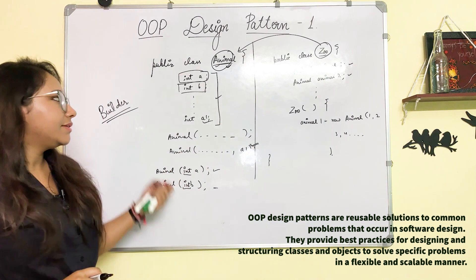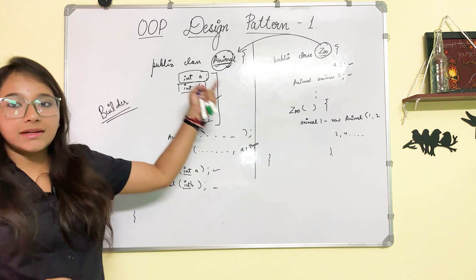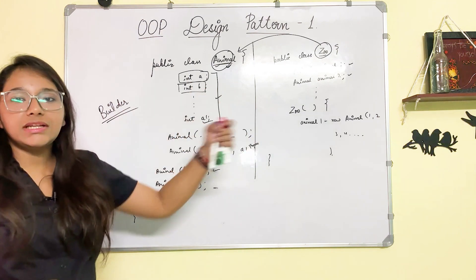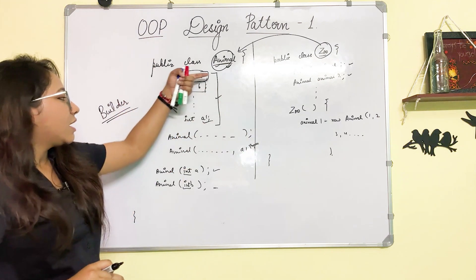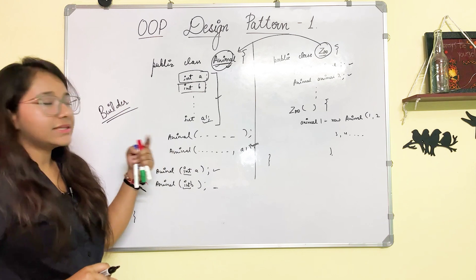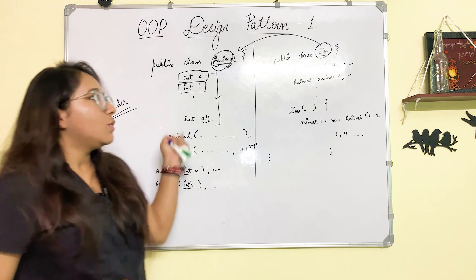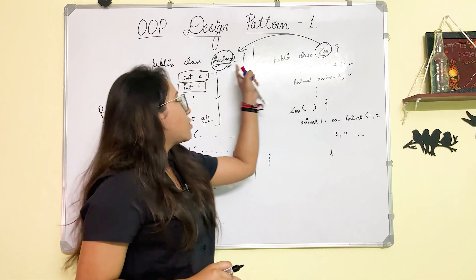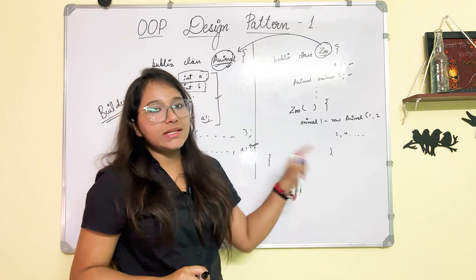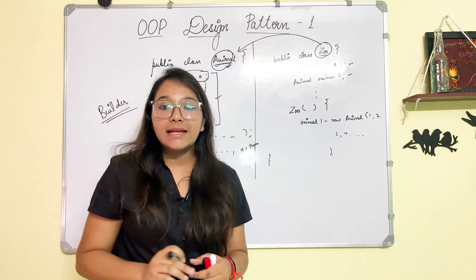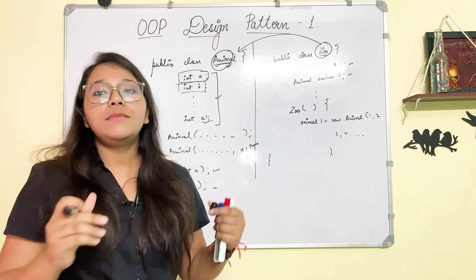What was the problem in it? Our two classes were tightly coupled because of object initialization. Because of this way, it was difficult to create objects of this particular class at various places in your code. So to solve these things, we study design patterns.